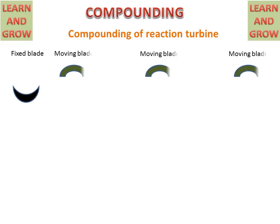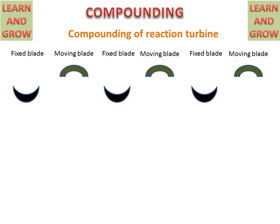In compounding of reaction turbine, the fixed blades and moving blades are arranged in stages: fixed blade, moving blade, fixed blade, moving blade, fixed blade, moving blade — repeated according to the number of compounding stages.